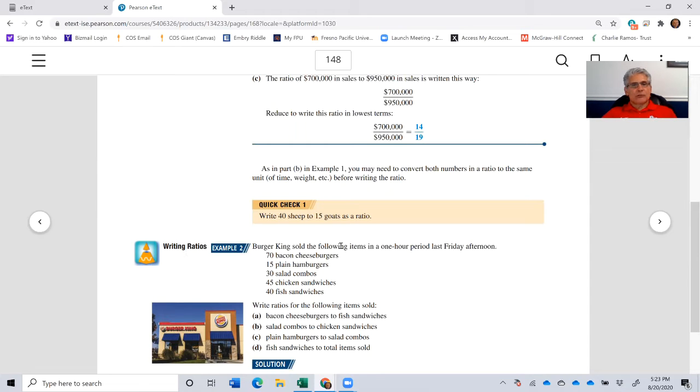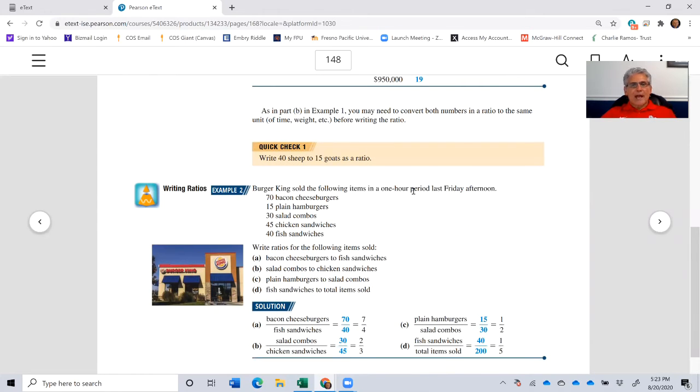Example two, writing ratios. Burger King sold the following items in a one-hour period last Friday afternoon: 70 bacon cheeseburgers, 15 plain hamburgers, 30 salad combos, 45 chicken sandwiches, and 40 fish sandwiches. Since all of these were sold in one hour, the measuring base is pretty much the same. What is the ratio between and among these items?